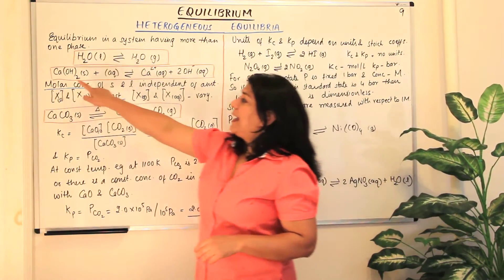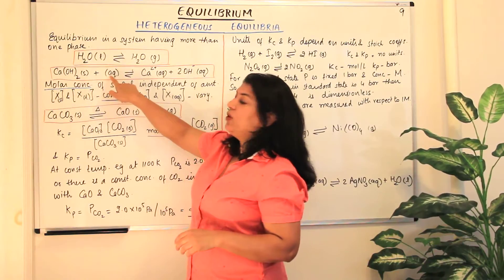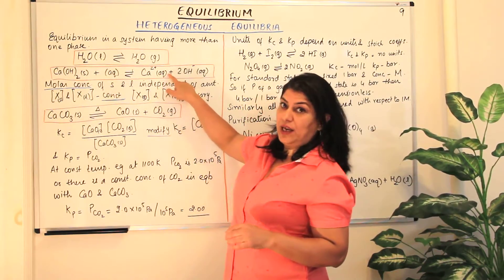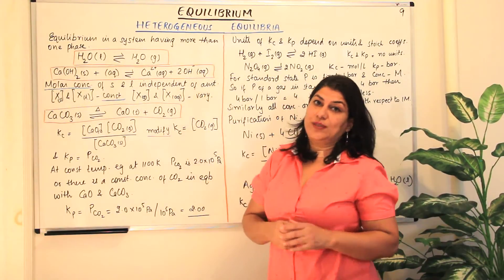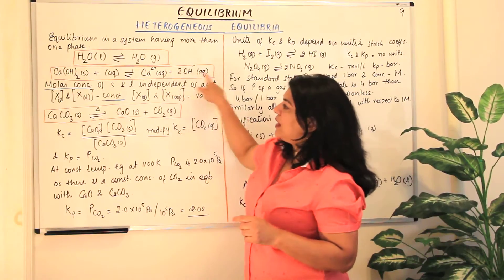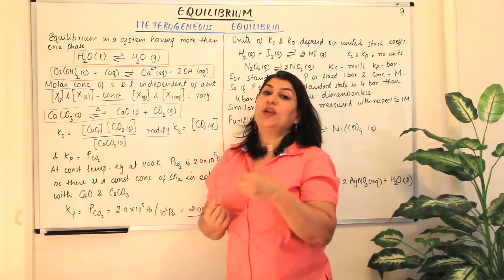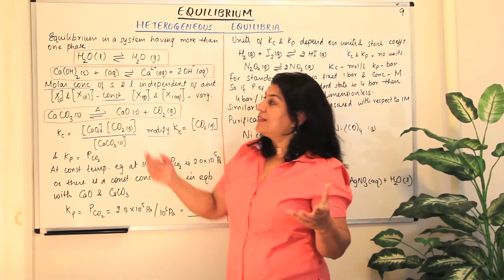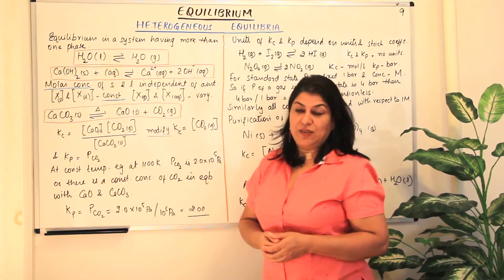Another example is calcium hydroxide in the solid state in equilibrium with calcium ions and hydroxide ions in the aqueous state. This equilibrium has aqueous and solid phases: calcium hydroxide is solid while the ions are aqueous. So again we have two different phases — the solid and the aqueous phase — therefore this is a heterogeneous equilibrium.